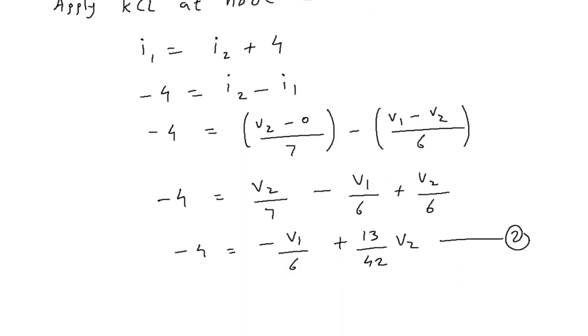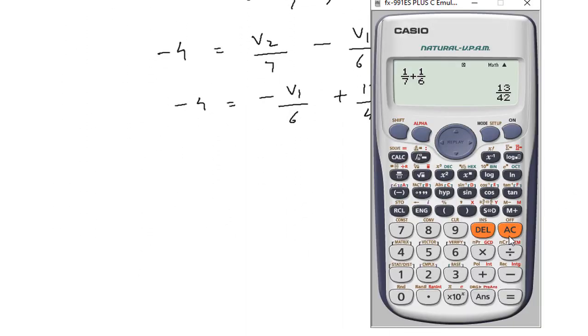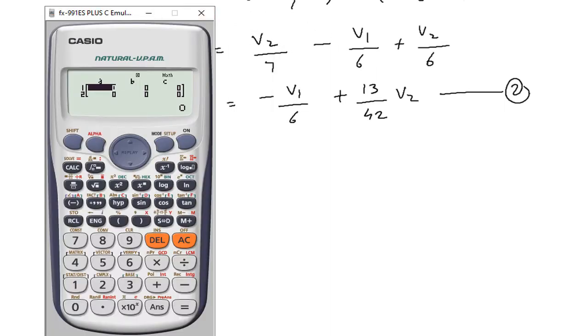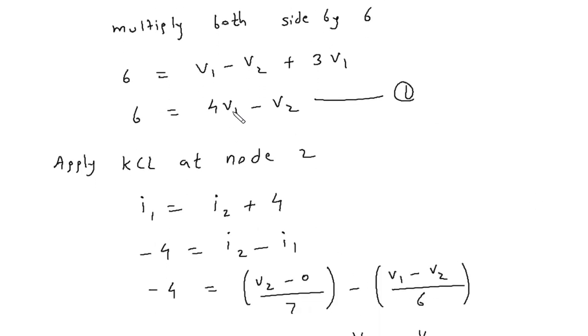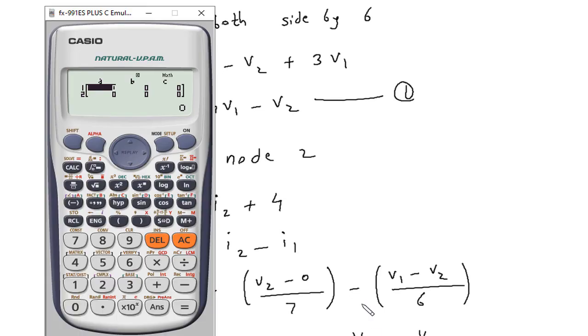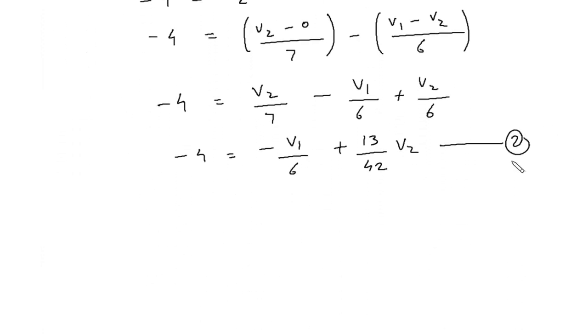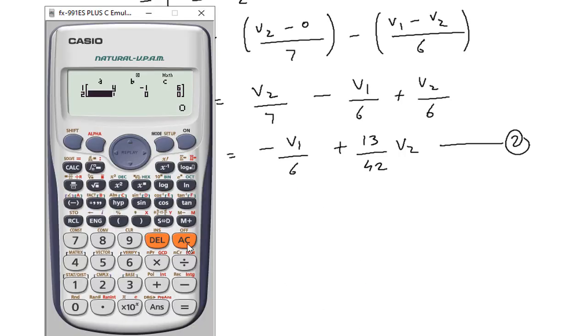Now using Cramer's rule or directly using calculator we can solve this. For equation number 1: 4V1 minus 1V2 equals 6. For equation number 2: minus 1 by 6 V1 plus 13 by 42 V2 equals minus 4.